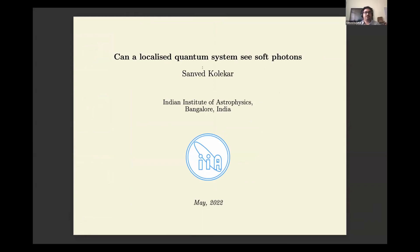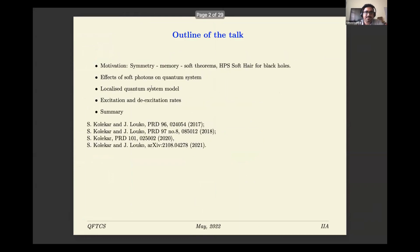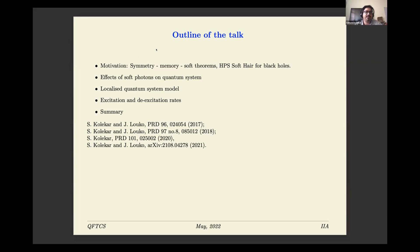Thank you to all the organizers for giving me this opportunity to talk. The basic outline is: first I'll talk about the motivation — what led us to look at a quantum model to search for soft photon effects. I'll discuss the first relation between symmetries, memory, and soft theorems, and how it was used by Hawking, Perry, and Strominger for soft black holes. Then I'll talk about why we want to know about soft photon effects on quantum systems, present the model, show calculations about excitation and de-excitation rates, and summarize. This talk is based on these papers, especially the last one.